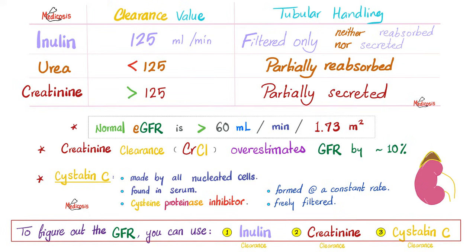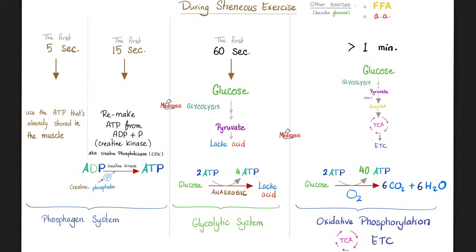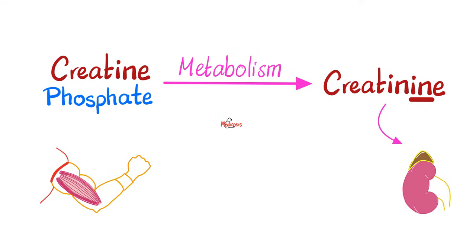Where did creatinine come from? It came from creatine phosphate, which helps your muscle get ATP in the first 15 seconds of exercise. Creatine phosphate in the muscle gets metabolized into creatinine, which goes to the blood to be excreted into the urine. That's why creatinine depends on your muscle mass. If I have kidney failure, I'll be unable to excrete creatinine and my serum creatinine will go up.